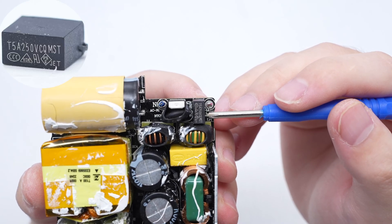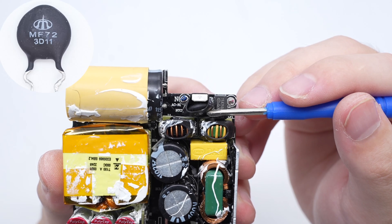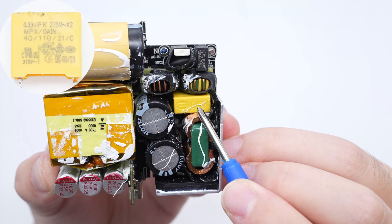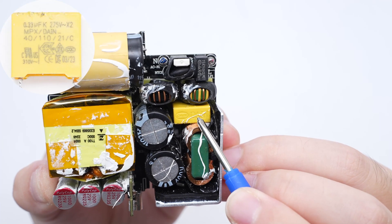There is the time delay fuse, 5 amps 250 volts. The NTC thermistor is used to suppress the power-up surge current. Here is the safety X2 capacitor, 0.33 microfarad.